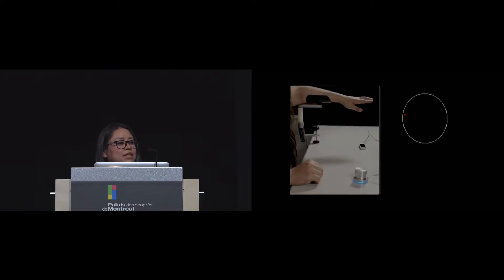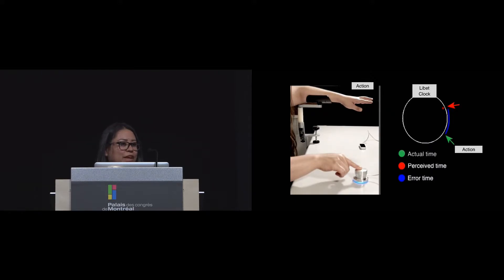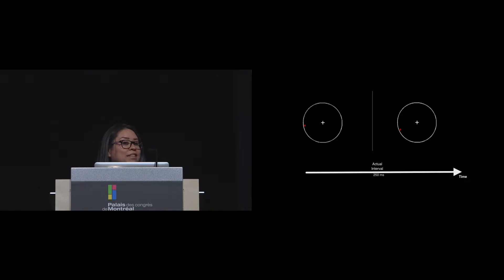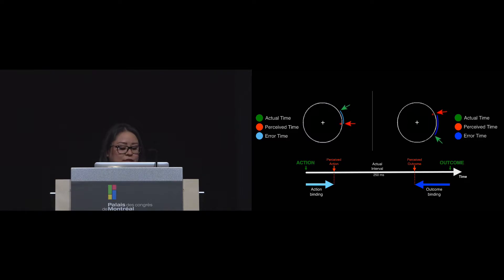During the intentional binding task, participants are shown a Libet clock on the screen that is rotating. There is an action, and we record the actual time of the action on the clock. Then participants report their perception of time by relocating the dot of the clock to the position where it was at the moment of the action or outcome. To calculate intentional binding, we record the actual time of the action and also the perceived time. The error — the difference between actual time and perceived time — is used to calculate action binding, which is normally a positive value. Similarly, we record the actual time of the outcome and the perceived time, and the error is used to calculate outcome binding, which is usually a negative value. Then we calculate total binding, which is just the summation of these two elements.